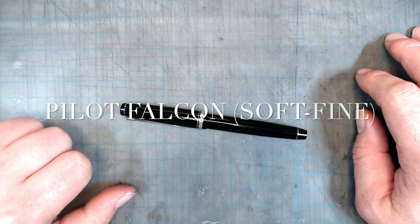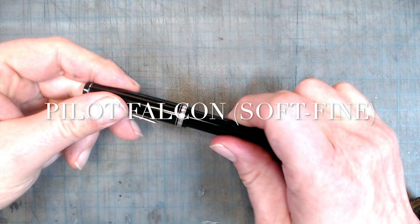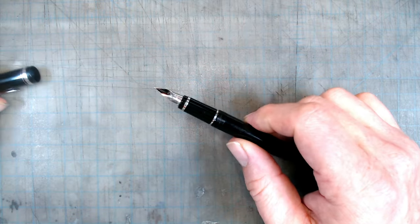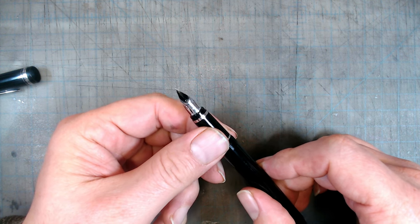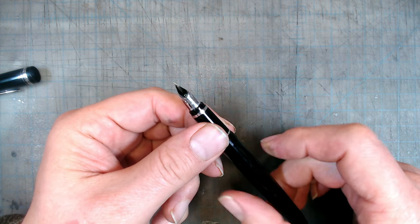Now let's talk about the Pilot Falcon with the soft, fine nib. This pen is famous for its unusual nib, which has long tapered shoulders and an unusual curve, giving it a unique ability to put down flat values in reverse, like this.